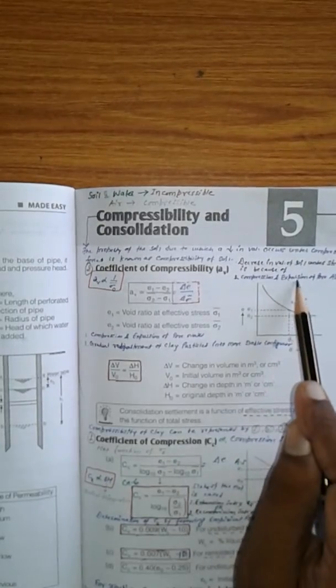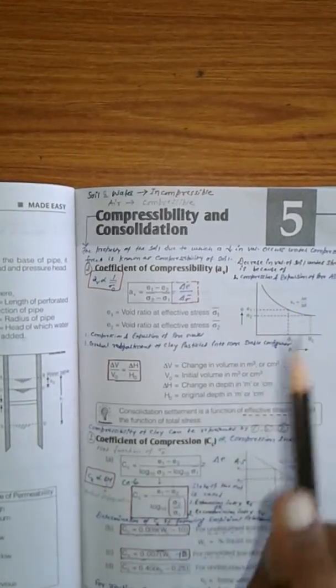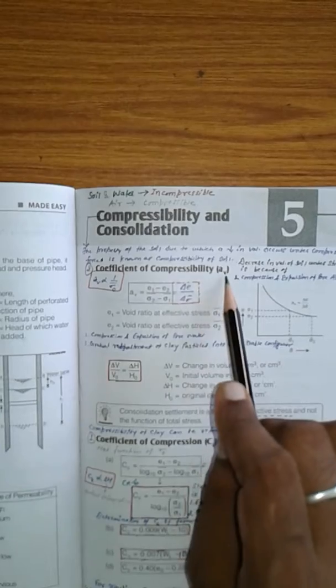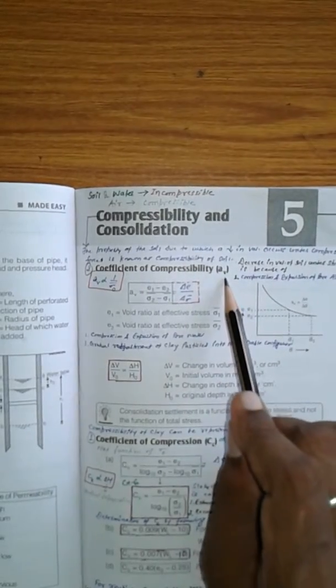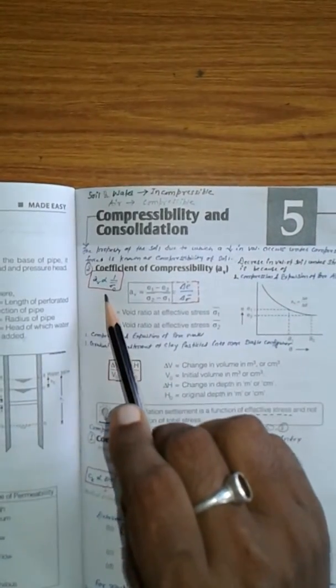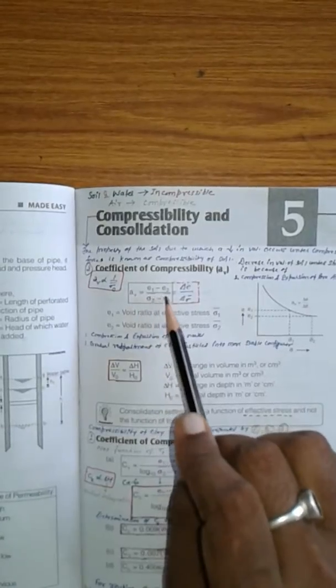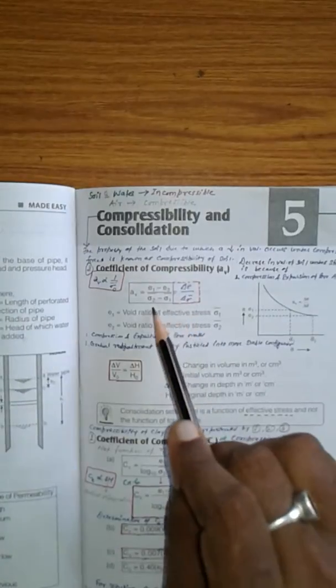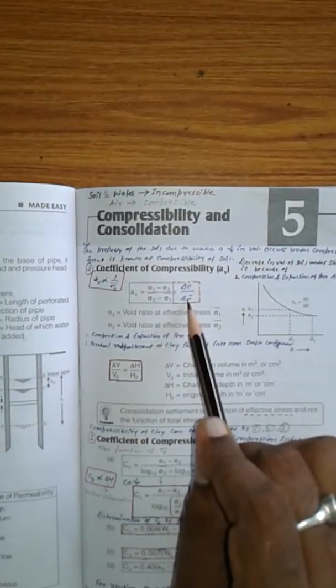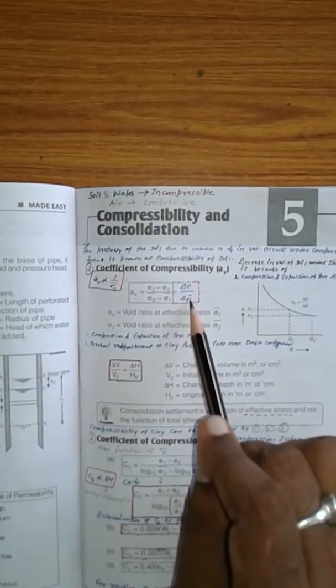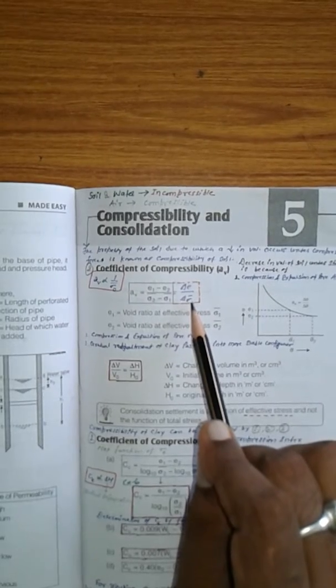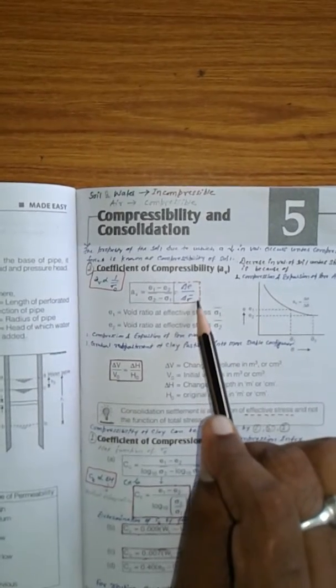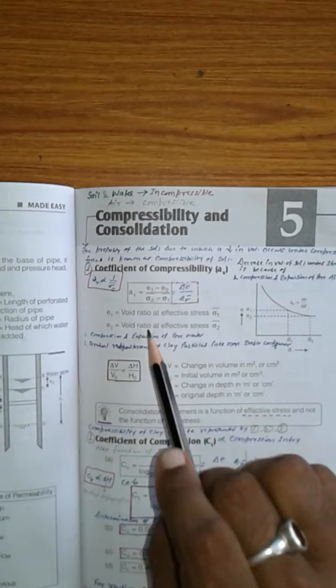Coefficient of compressibility, which is indicated by Av, is equal to change in void ratio upon change in stresses. And this stress is del sigma bar.